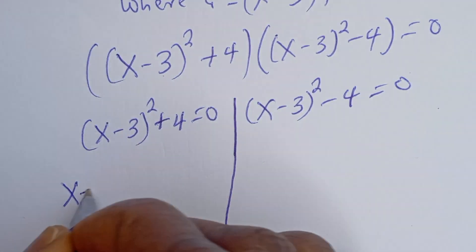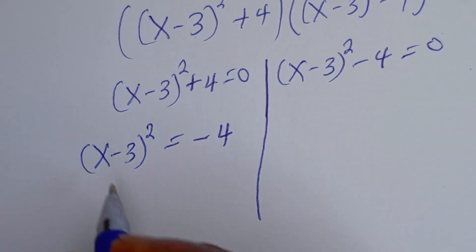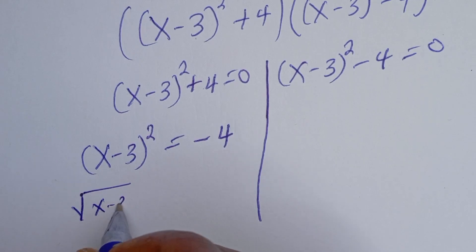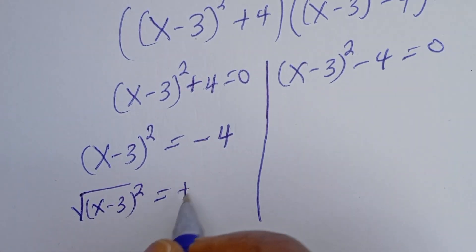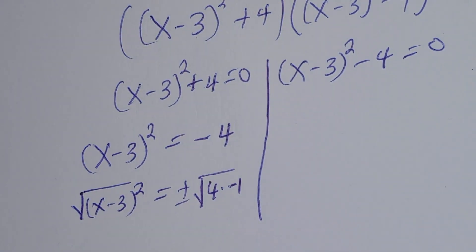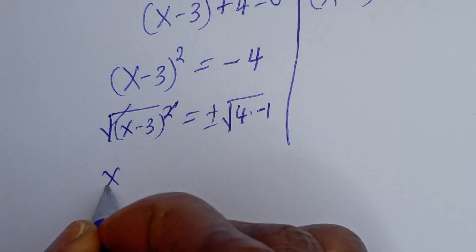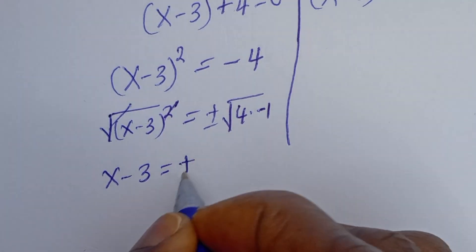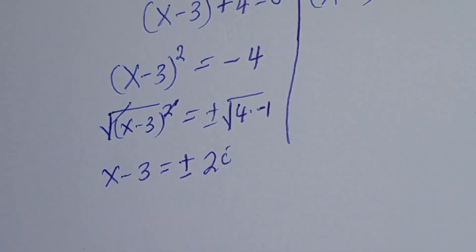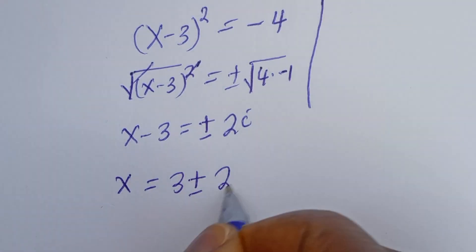From the first case, S minus 3 squared is equal to minus 4. Taking the square root of both sides, we have S minus 3 is equal to plus or minus the square root of minus 4. Since the square root of minus 1 is i, this gives plus or minus 2i. Therefore, S is equal to 3 plus or minus 2i.